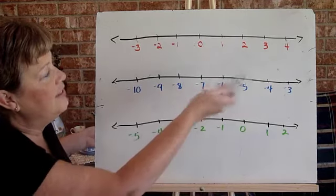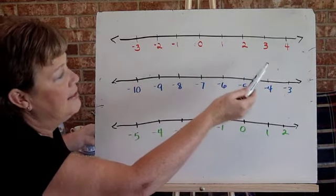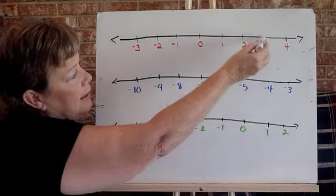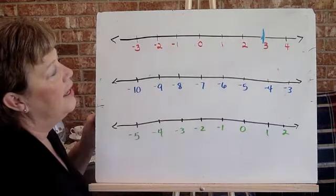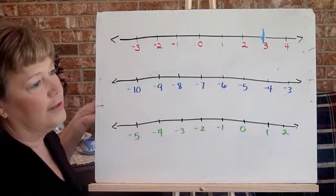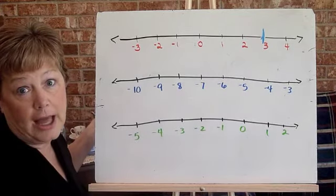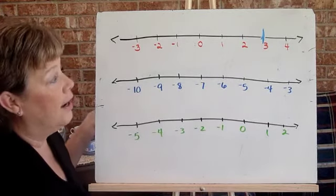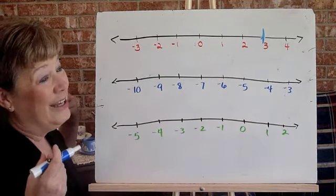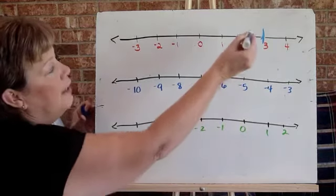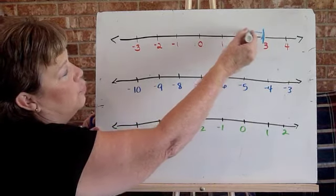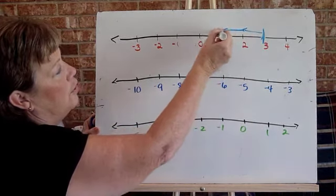So if I looked at this number line and I started at three and the quarterback was on the three yard line and he was sacked for a loss of two yards, he would go back two yards, one yard, two yard.